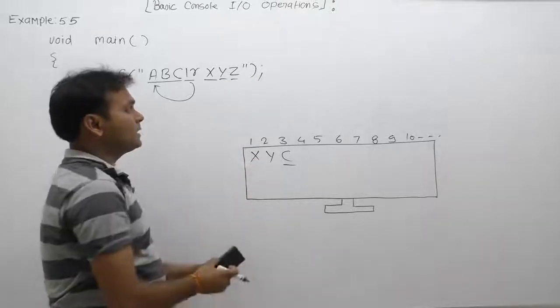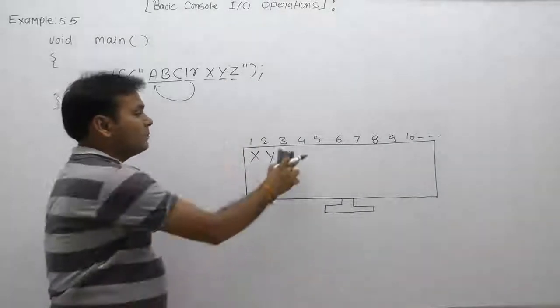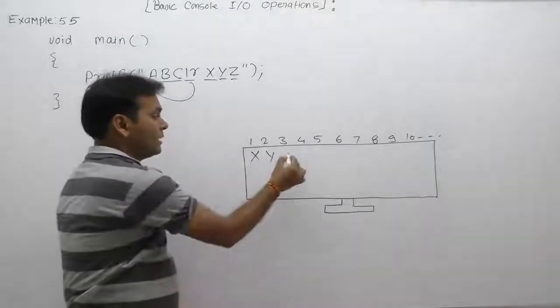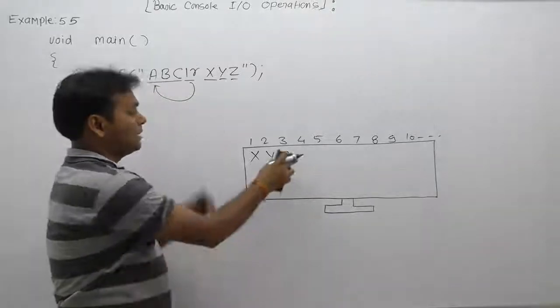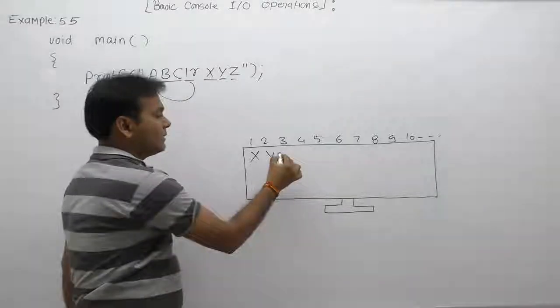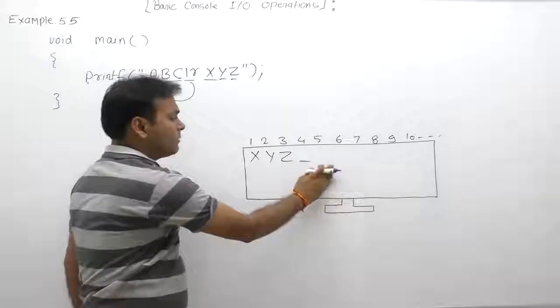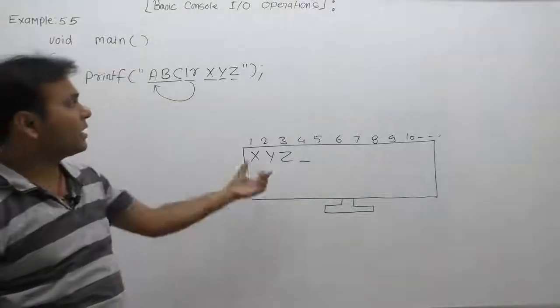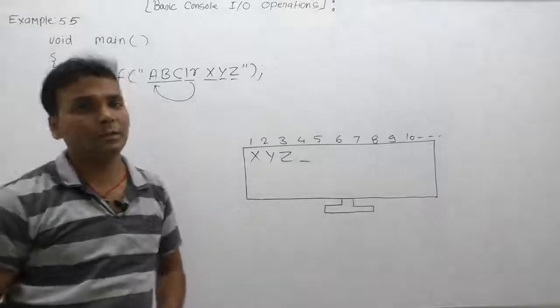It will print Z in place of C. Then cursor will be available on the fourth position. This is the final output regarding the given print statements.